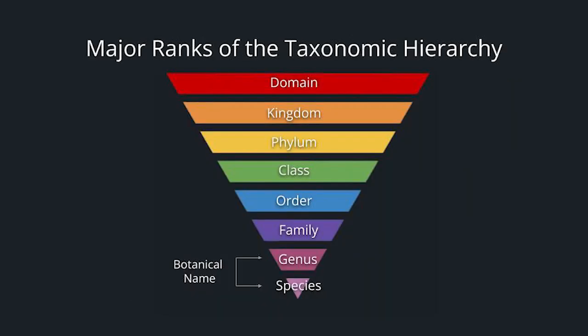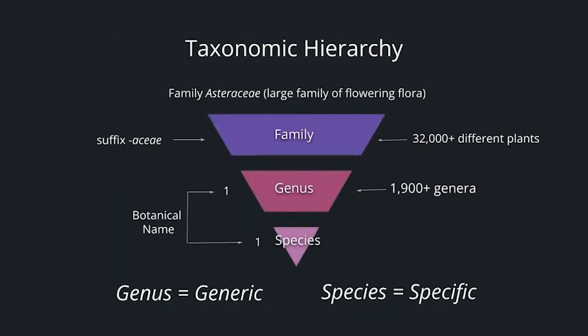These are the major ranks of the taxonomic hierarchy. We're only going to focus on the bottom two of the pyramid. As an example, the family Asteraceae is the largest family of flowering flora — they have composite flowers, and within that family there are 32,000 different plants and over 1,900 genera. When dealing with the botanical name, it uses one genus and one species to refer to one specific plant. A way to remember: genus is the generic, and species is the specific.